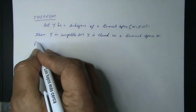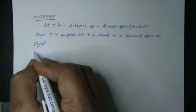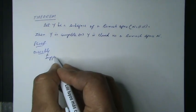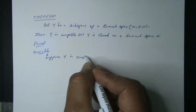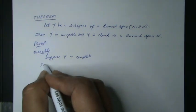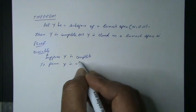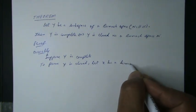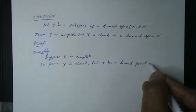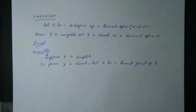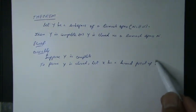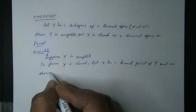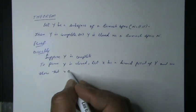Proof: Directly. Suppose Y is complete. To prove Y is closed. Let x be a limit point of Y, or x belongs to closure Y. We show that x belongs to Y.